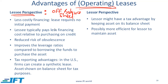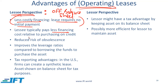If you borrow money to buy the asset, your debt is going up, so your ratios that involve debt such as solvency ratios will also look worse. Very often companies try to use off-balance-sheet financing. With leases, you are simply making your lease payments; you don't need to make a huge upfront payment for the leased equipment. Leases typically pay less financing cost relative to the purchase on credit.